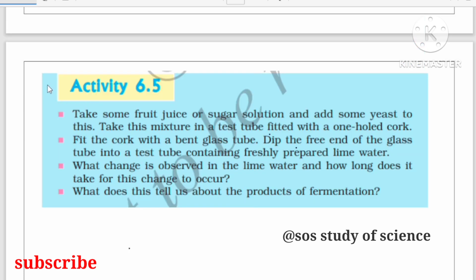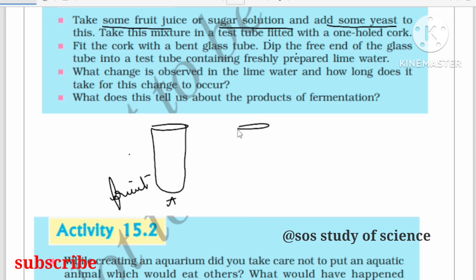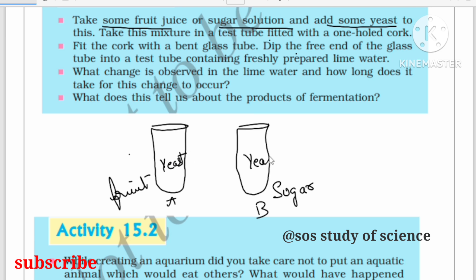Now let us look at Activity 6.5. Take some fruit juice and sugar solution, and add some yeast to each. Take two test tubes: test tube A containing fruit juice and test tube B containing sugar solution. Add some amount of yeast to both.